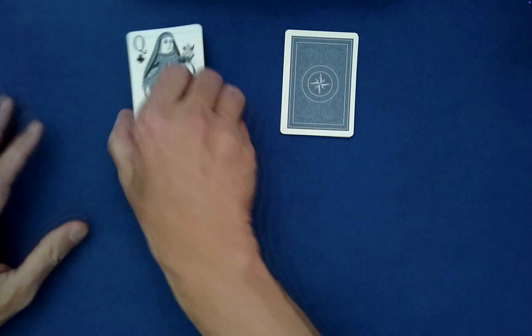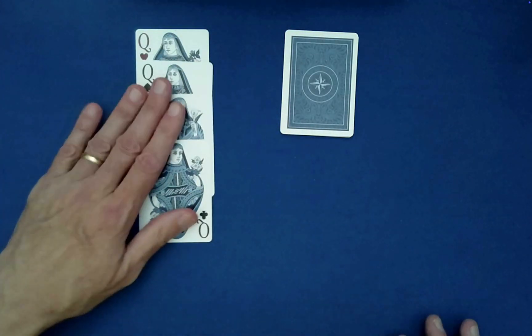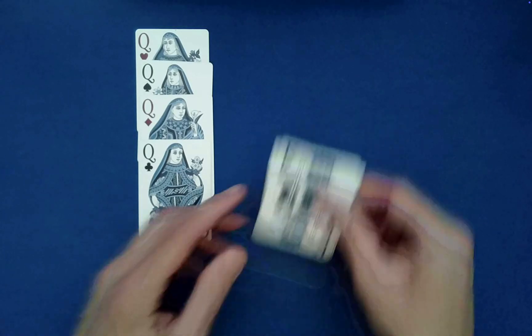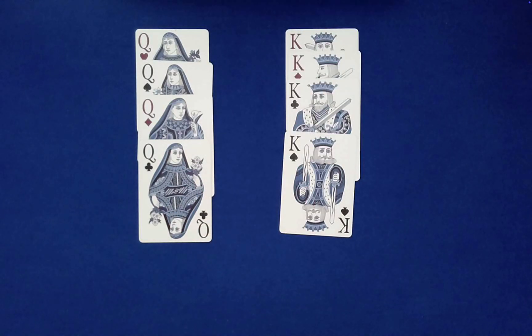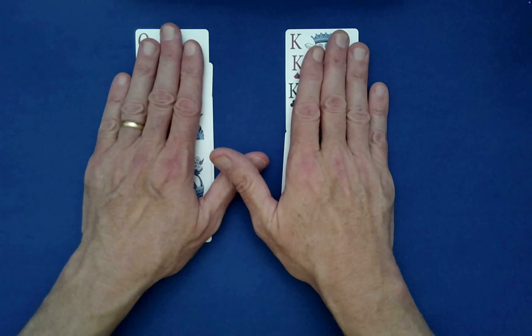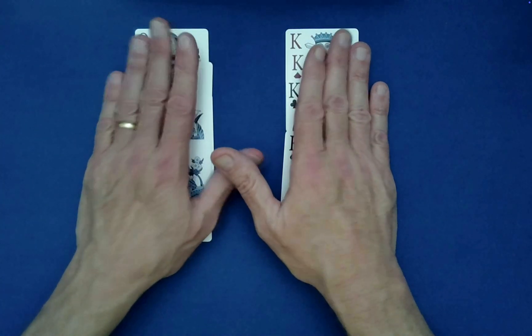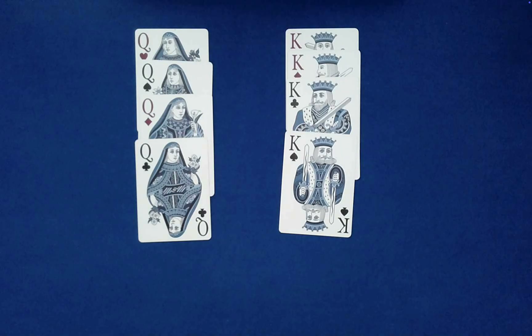So let's just kind of show that here. There are the four queens. And here are the four kings. In fact, before the spelling, if you had just glimpsed the bottom card, you would actually know which pile has the kings and which pile has the queens. If you want to just add that as kind of a surprising element.